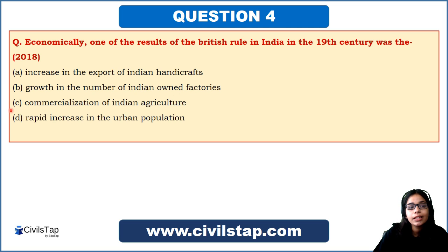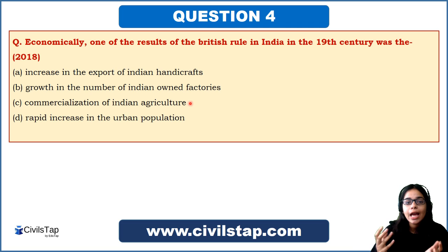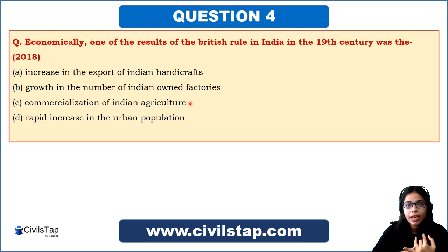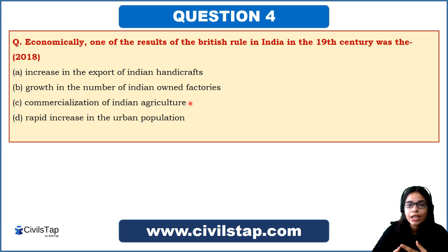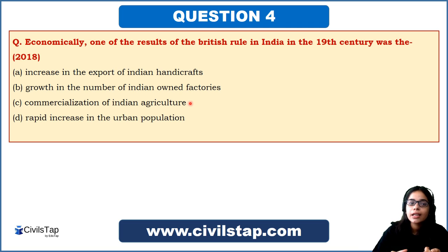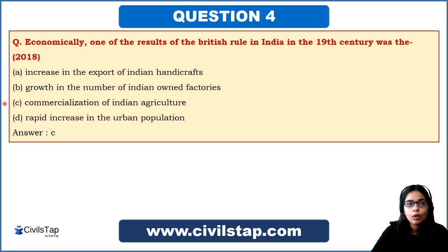We are left with option C — commercialization of Indian agriculture — which is the correct answer. This was the main impact of British rule in the 19th century. Because of the Industrial Revolution in Britain, the British commercialized agriculture in India. Commercial crops such as cashew, tea, and coffee were introduced. Before this, India was only on a subsistence farming basis, where people grew only what they needed. The British commercialized the entire Indian agricultural system, and this was one of the main impacts of their rule. So C is the answer.